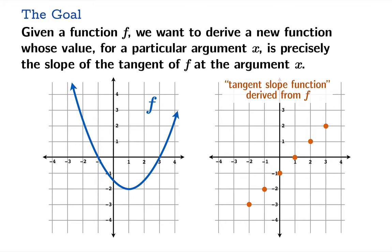Now in this example, it sure looks to be the case that this tangent slope function derived from the original function is linear, and we might guess that this is indeed what the graph of this derived function looks like.